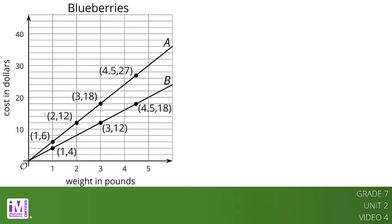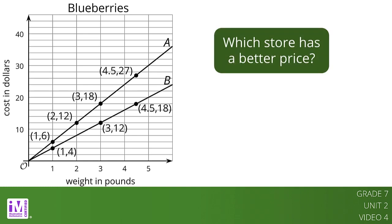Here is a graph that shows the price of blueberries at two different stores. Which store has a better price? We can compare points that have the same x value or the same y value. For example, the points (2, 12) and (3, 12) tell us that at store B you can get more pounds of blueberries for the same price. The points (3, 12) and (3, 18) tell us that at store A you have to pay more for the same quantity of blueberries. This means store B has the better price.